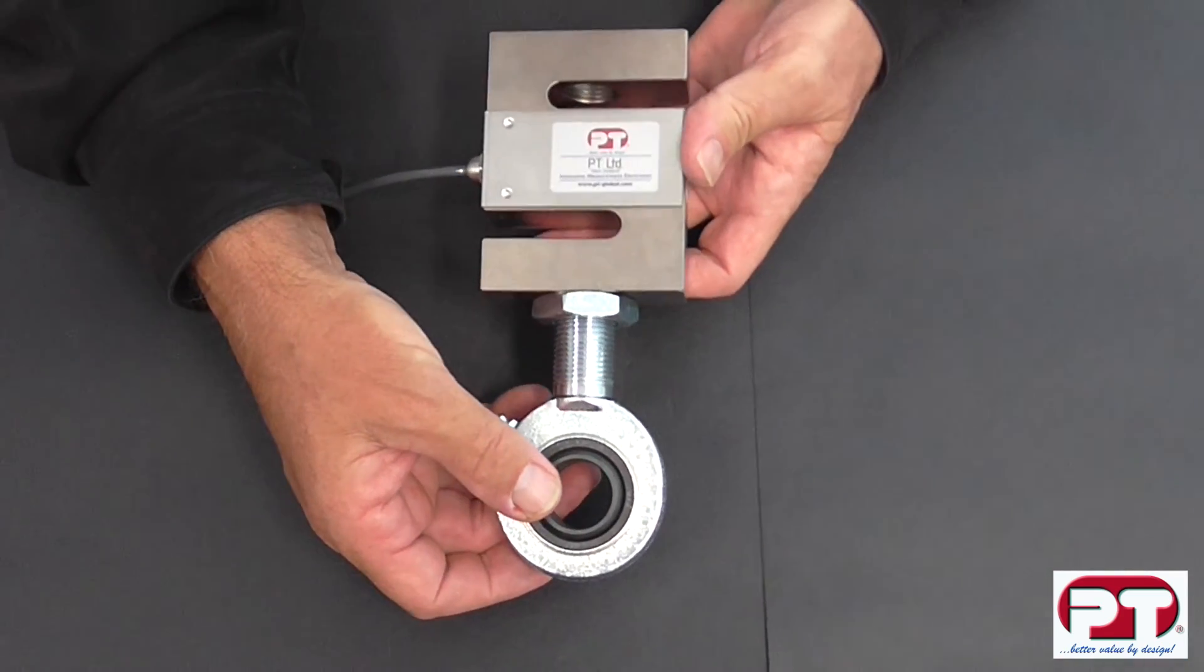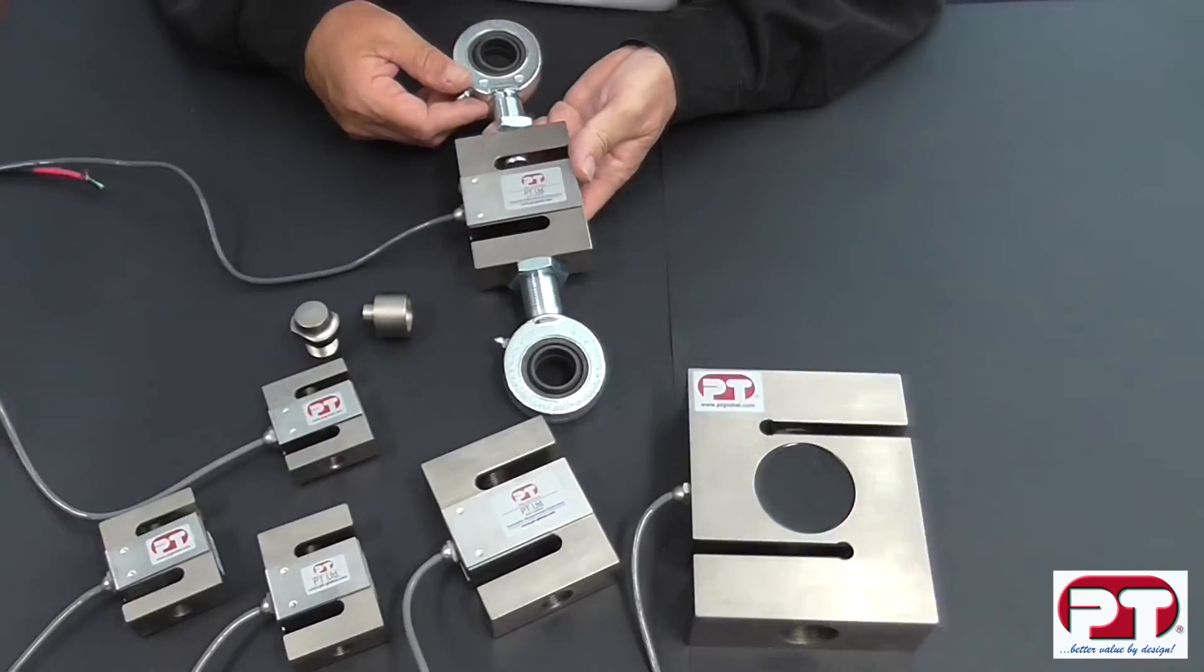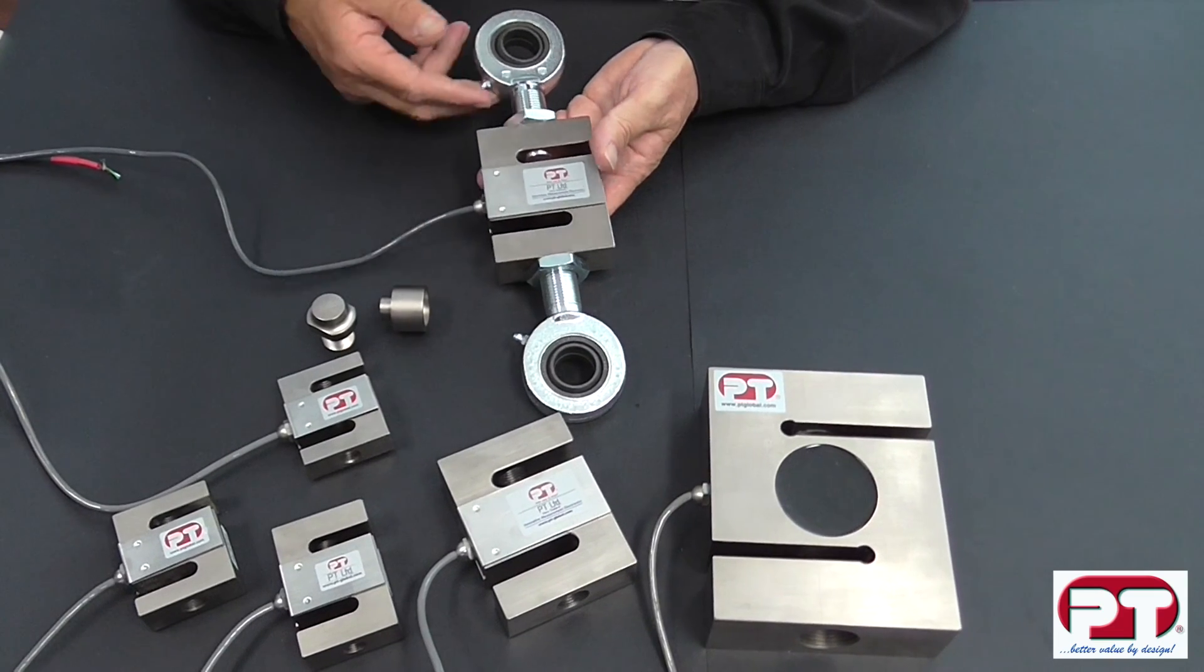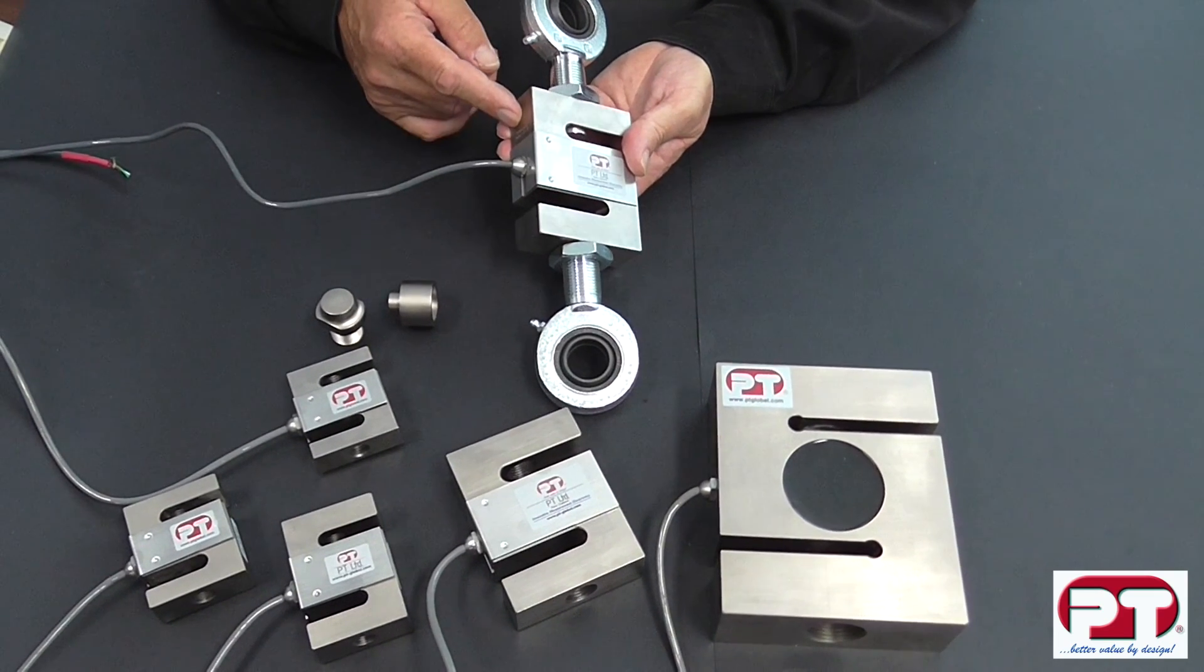Here is the PT-4000 used with a single mounted rod end bearing. And here we have the PT-4000 mounted with two rod end bearings. Again, this is a 3,000 kg capacity load cell.